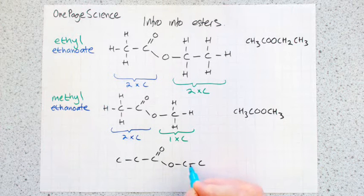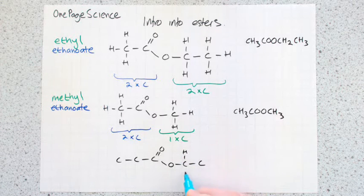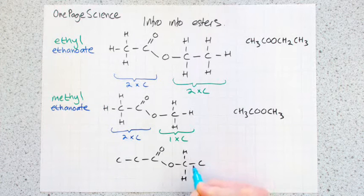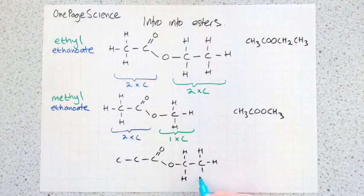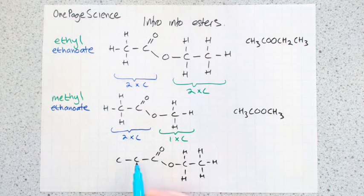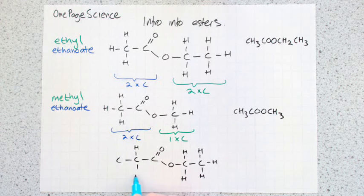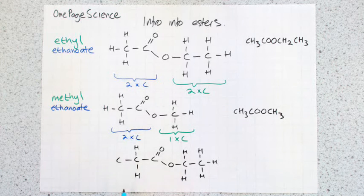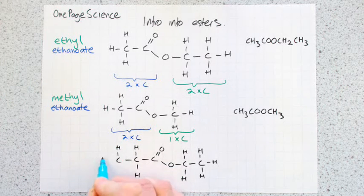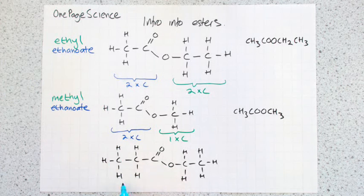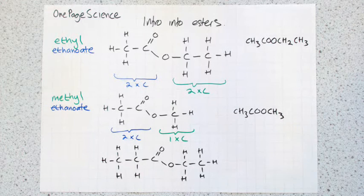This carbon's currently got one, two, so it needs two more. This carbon's only got one bond, so it needs three more. This carbon's got two bonds, so it needs two more hydrogens. This carbon's only got one, so it needs three.